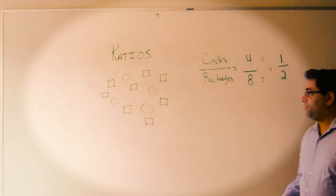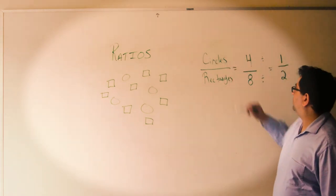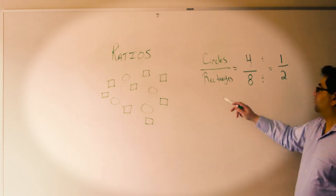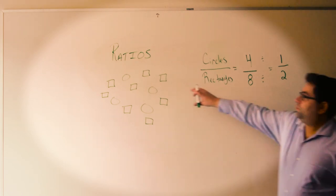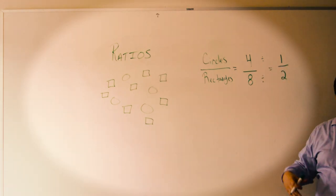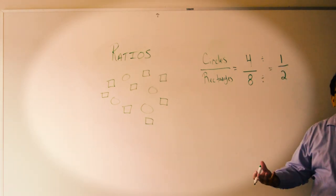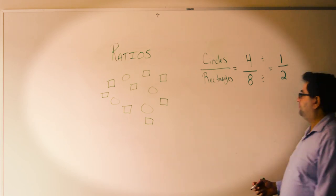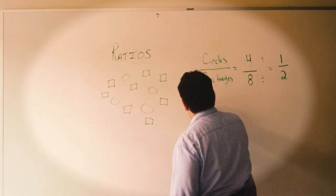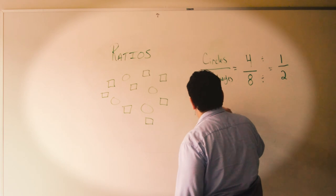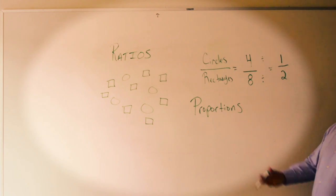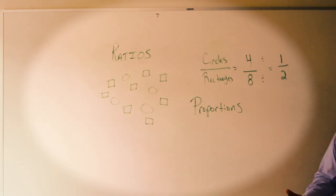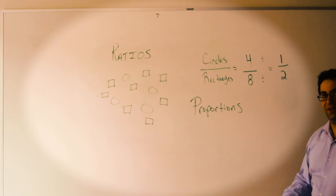So this means that for every one circle, I have 2 rectangles. So from ratios, we get proportions. What is a proportion? How does it connect to ratio? A proportion is very simple — a proportion is when 2 ratios are equal.